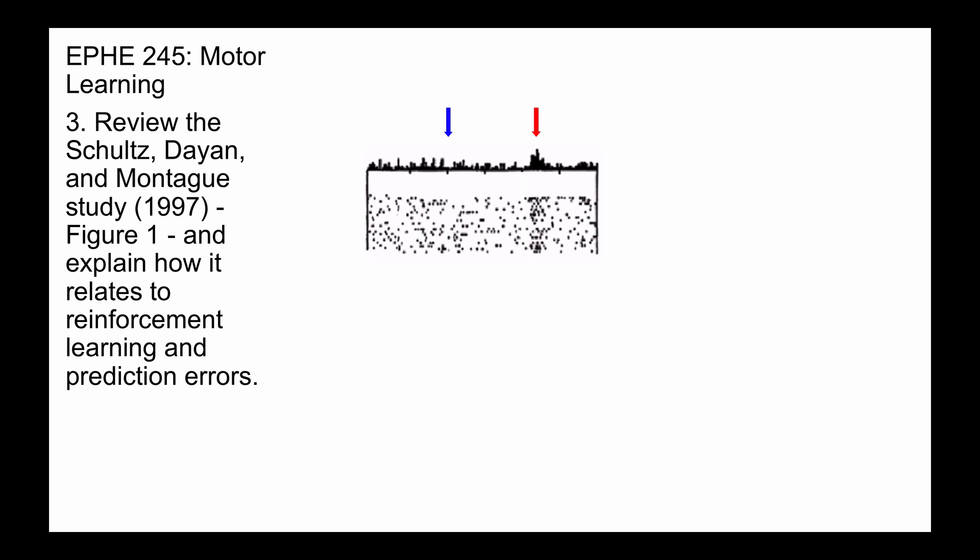One thing you'll note here is that there's a tonic, or background, firing rate of the dopamine system that's quite variable, and in this case the reward just resulted in a very brief increase in firing rate.